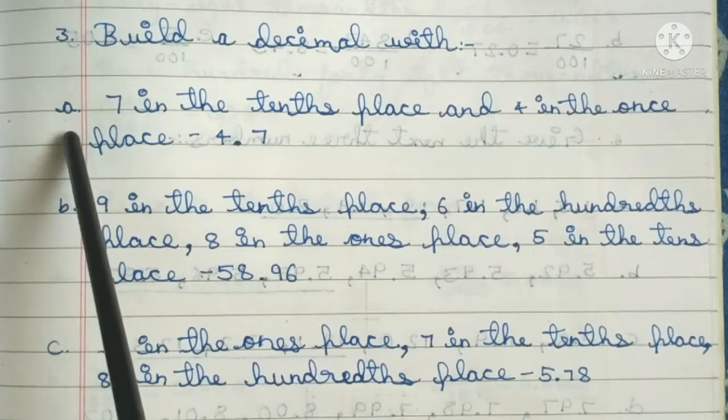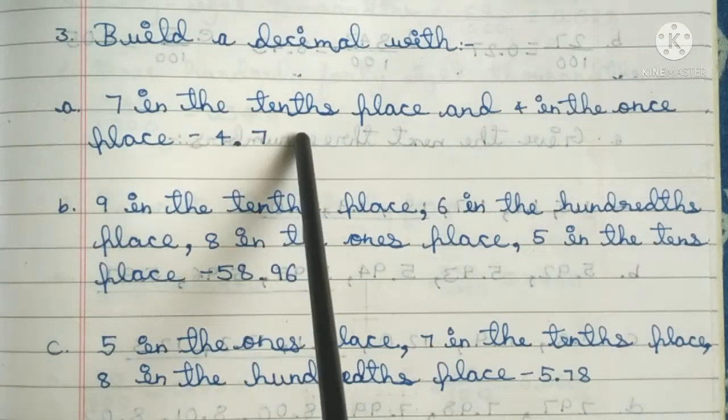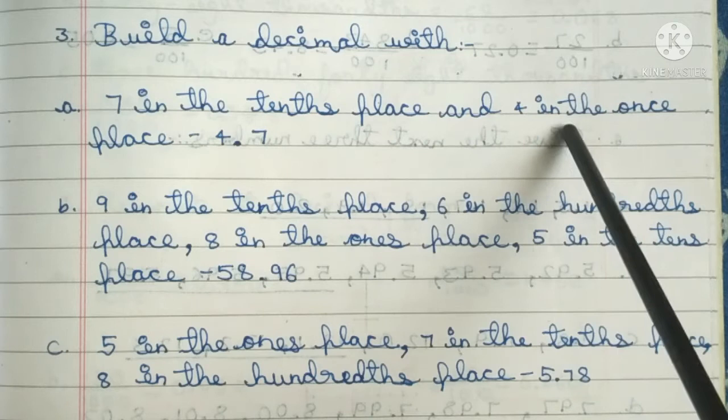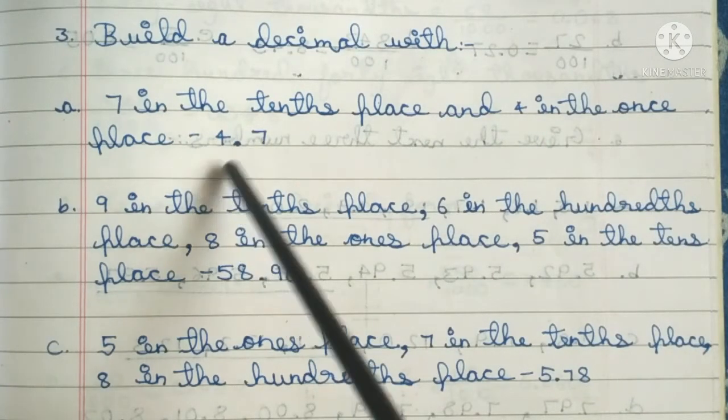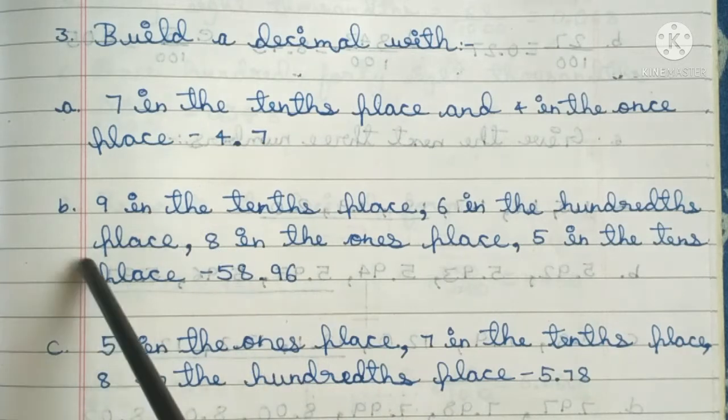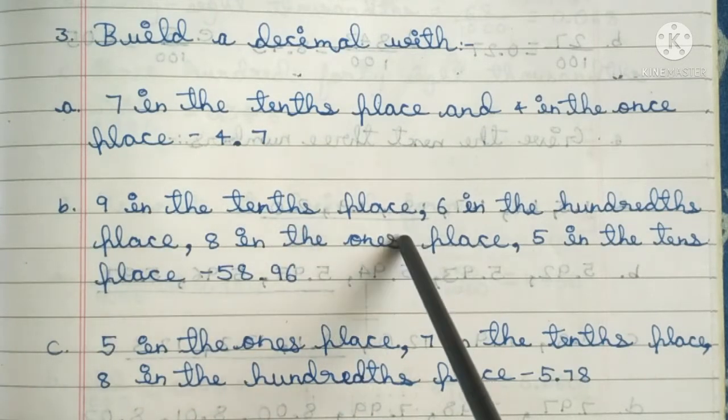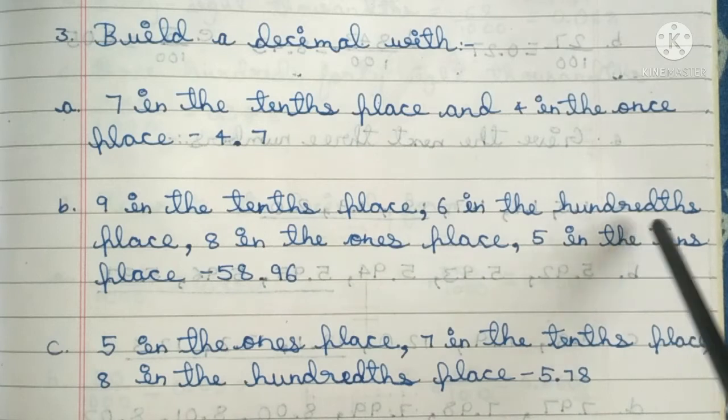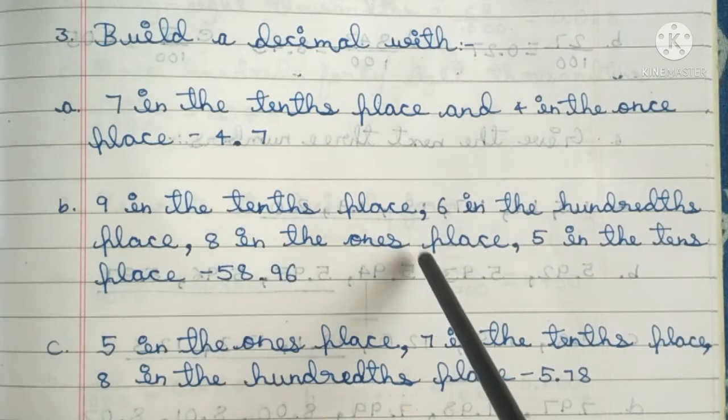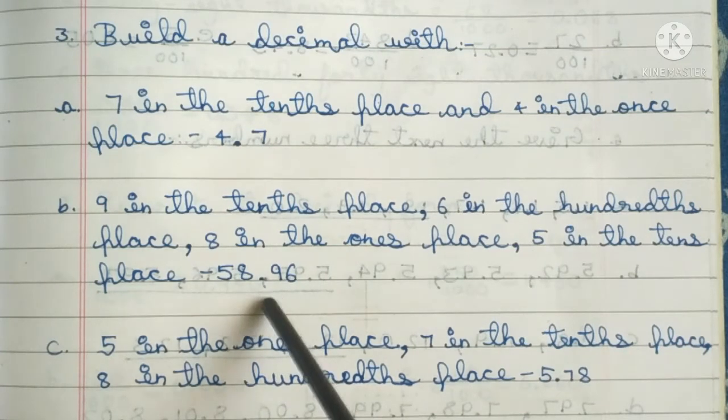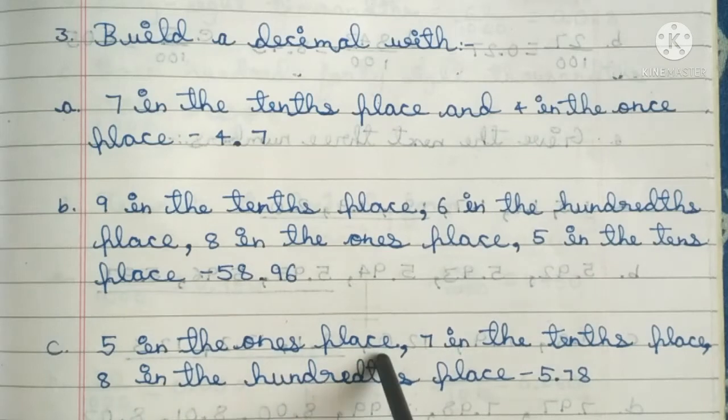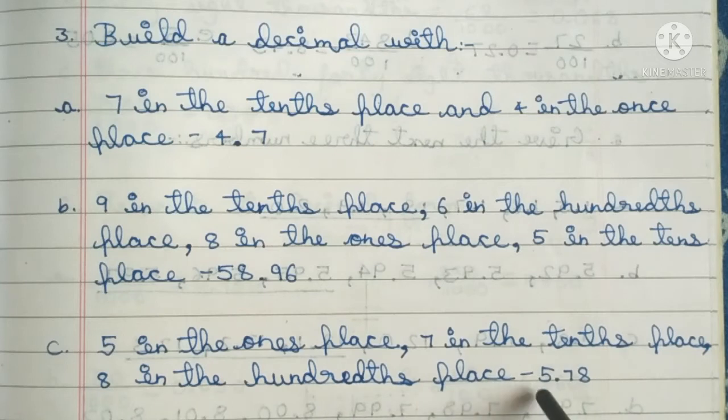First one: 7 in the tenths place and 4 in the ones place, that is 4.7. Second one: 9 in the tenths place, 6 in the hundredths place, 8 in the ones place, 5 in the tens place, that is 58.96. Third one: 5 in the ones place, 7 in the tenths place, and 8 in the hundredths place, that is 5.78.